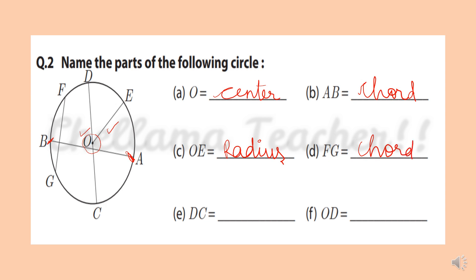DC is a line segment connecting two points on the boundary of the circle. Also, it passes through the center. So it is called a diameter. OD is also known as radius.